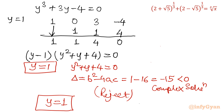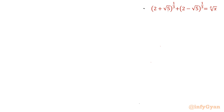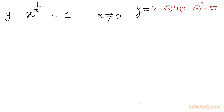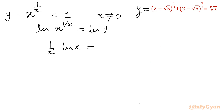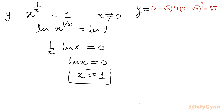So y = 1, and recall that y = x^(1/x). Therefore x^(1/x) = 1. Note x cannot equal 0 since it appears in the exponent denominator. Taking ln of both sides: (1/x) ln x = ln 1 = 0. Since x ≠ 0, we need ln x = 0, which means x = 1. This is the only real solution.